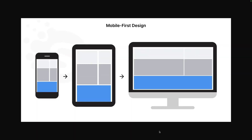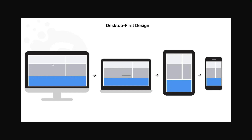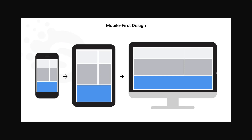In this video we are going to look at the mobile-first design approach to building a responsive website. As you can see in the diagram, the arrow begins from a smaller device moving to medium and then larger. This means we write our default CSS for a smaller device and use media queries for larger devices. For desktop-first, it's the opposite — we begin from a larger device and use media queries to write for smaller devices.